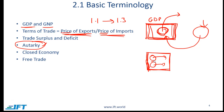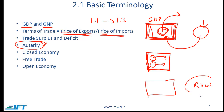The opposite of autarchy is free trade, which corresponds to an open economy. With free trade, a given country trades freely with the rest of the world — it easily sells goods and services abroad, and goods and services from the rest of the world easily come into this country with little or no restrictions.